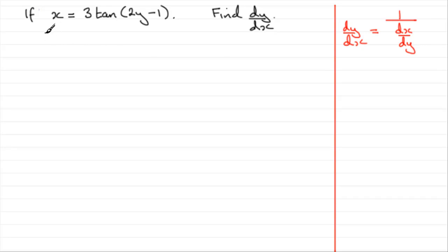Okay, so let's make a start on this one. What we've got to do then is, first of all, find dx by dy. Now, unfortunately, this has got 3 tan of, it's not just 3 tan y, it's 2y minus 1. It's what we call a composite function in here.